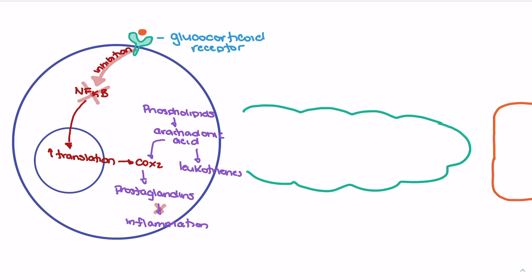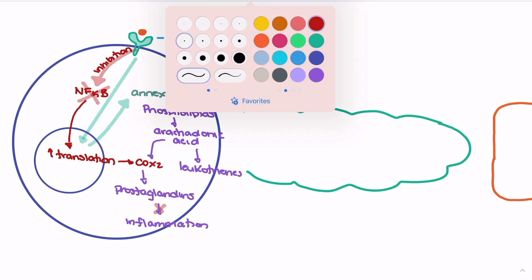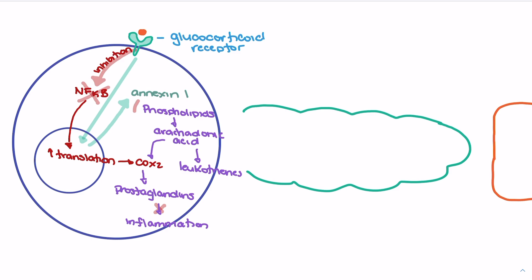We also see an increase in translation as a result of glucocorticoid receptor activation — specifically, increased translation of annexin-1. Activation of the glucocorticoid receptor promotes formation of annexin-1, which plays an important role in inhibiting the conversion of phospholipids to arachidonic acid. So the step where phospholipids become arachidonic acid is blocked by annexin-1, which also decreases inflammation.